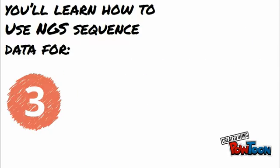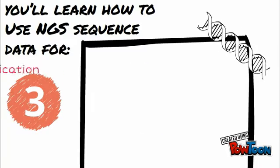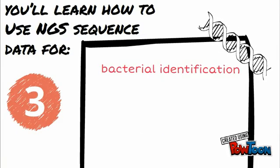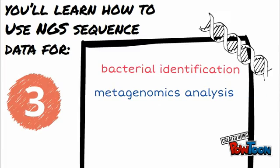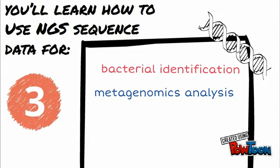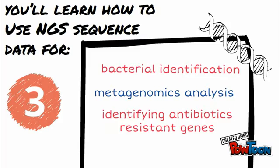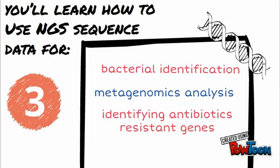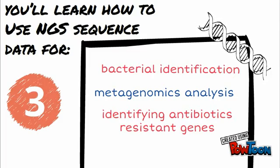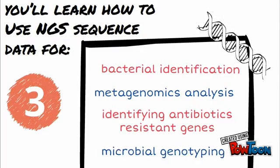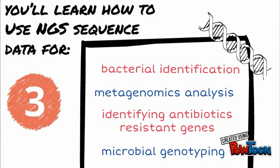By the end of this training course, you will be able to perform 16S sequence based bacterial identification and basic metagenomics analysis. In addition, you will be able to identify antibiotic resistant genes and microbial genotypes.